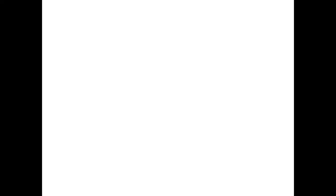Now what do we know so far? We know that definite integrals give us what's called net-signed area bounded between the curve y equals f of x and the x-axis. What does that mean again? Here's a definite integral, an easy one: the integral from negative 1 to 2 of x dx. And there's the graph below it of y equals x on that interval from minus 1 to 2.